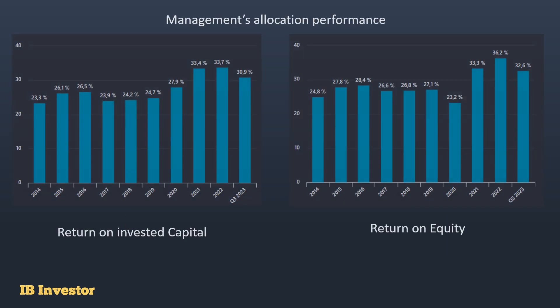For management's capital allocation performance, the return on invested capital is quite high — more than 30 percent in the most recent period — which I didn't expect when I first looked at this company. Management has done an excellent job producing strong earnings. Return on equity has also been double-digit throughout the 10-year period, also recently in the 30s. These are strong numbers reflecting good investment decisions by management.